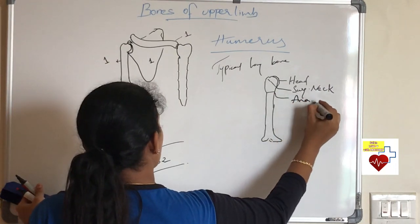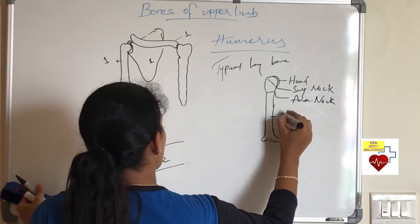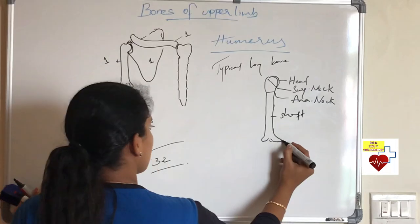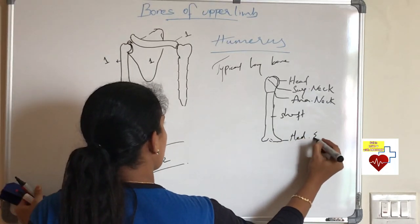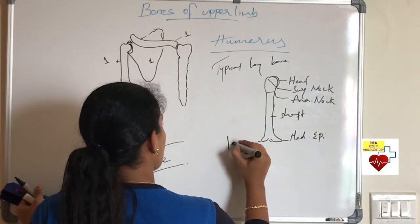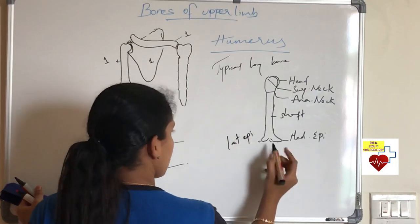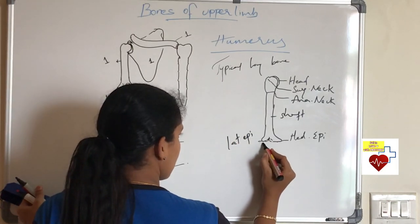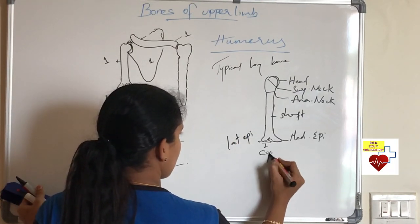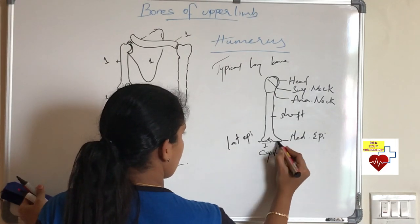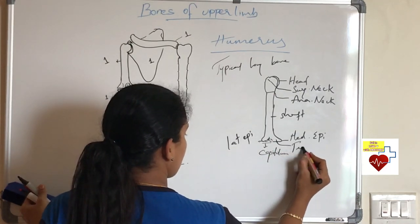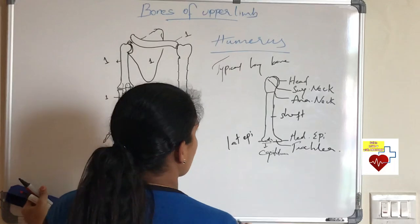And this is called surgical neck. We will know about surgical neck in detail later. And this constriction between head and shaft is anatomical neck. The middle part is shaft. This medial prominent part is medial epicondyle. This side you have lateral epicondyle. Near the lateral epicondyle you have capitulum. Near the medial epicondyle we have trochlea.